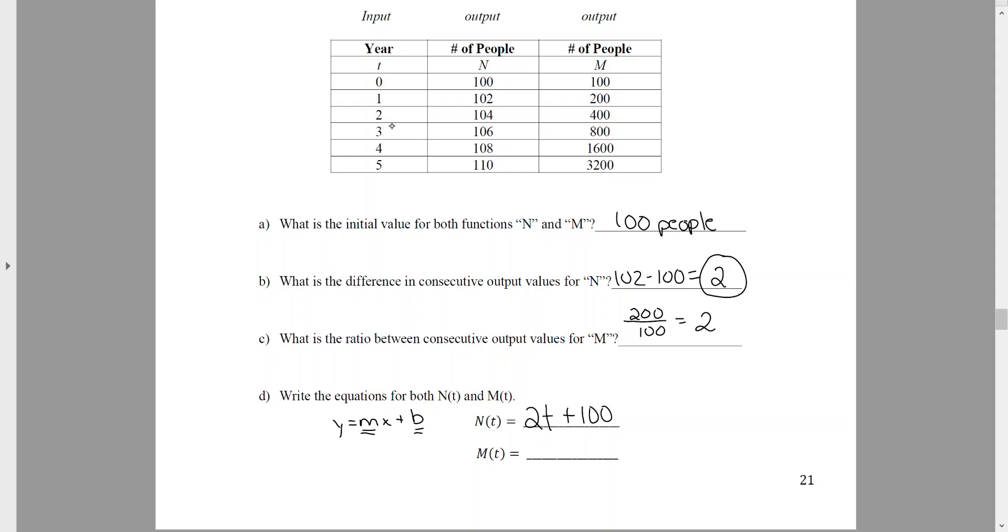So if I check this and I plug in the number 3, representing the year 2003, and I plug in a 3 here, N of 3 is equal to 2 times 3 plus 100, which gives me out 106 people. And that's what happened. I can do that for 5 as well. Plug it in, make sure that I come up with 110 people. So I know my formula here is valid. Now I want to try for M of T. M of T, we said you had to multiply by 2 to get to the next output value here. So when I multiply, that's going to be an exponential equation. So I go back to my exponential form. Y equals C A to the X.